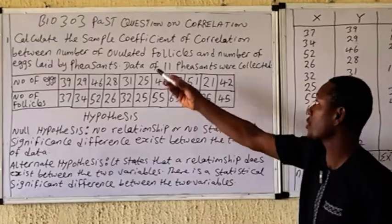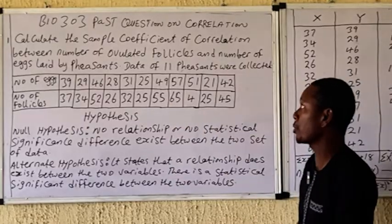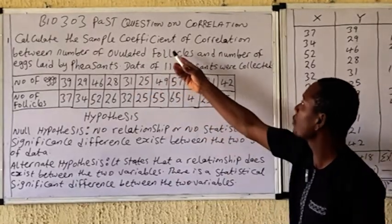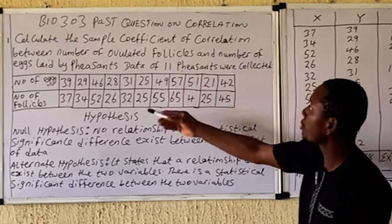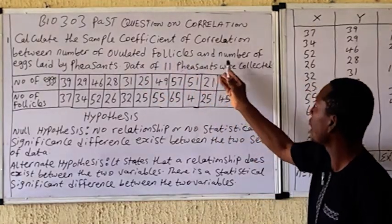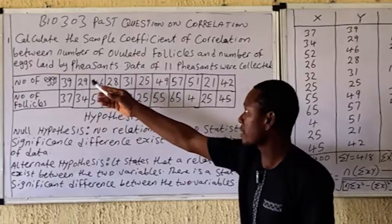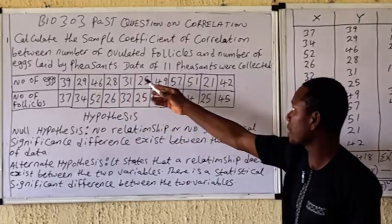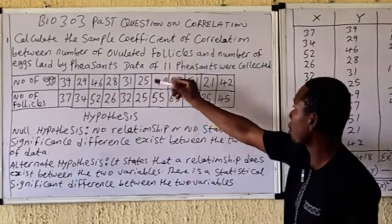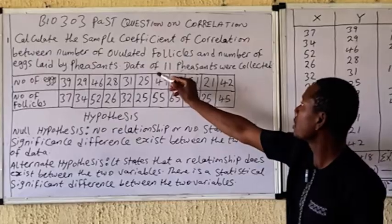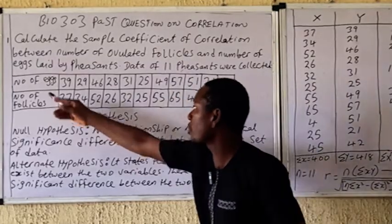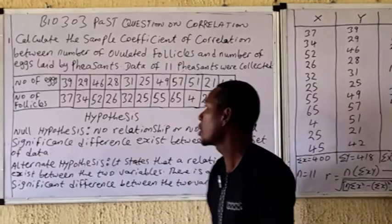Let's take a look at this question on the application: Calculate the sample coefficient of correlation between the number of ovulated follicles and the number of eggs laid by pheasants. Data of 11 pheasants were collected. You can see the number of eggs and the number of follicles listed.